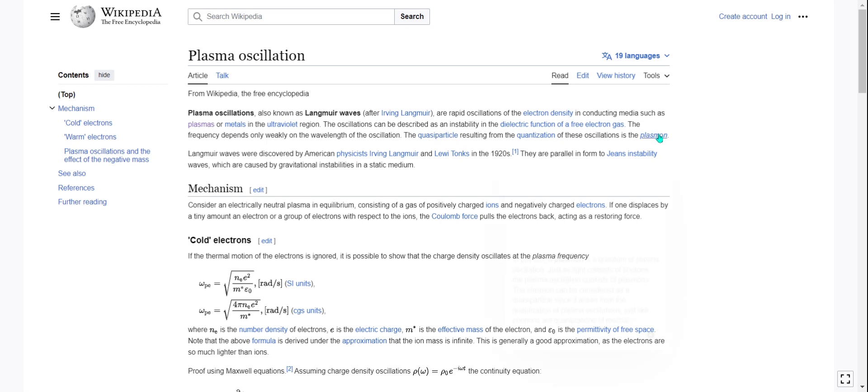Plasmon. I don't actually know what plasmon is. A plasmon is a quantum of plasma oscillation. Just as light consists of photons, the plasma oscillation consists of plasmons. The plasmon can be considered as a quasiparticle since it arises from the quantization of plasma oscillations, just like phonons are quantizations of mechanical vibrations.